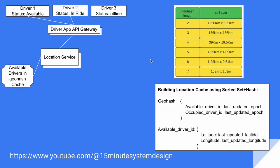Now, what is geo hash? Geo hash is a location encoding standard where the length of the geo hash determines the cell size in the map. This is how our sorted set for geo hash level looks. The geo hash ID is a key, and in the sorted set we maintain the driver ID along with the last updated epoch. We can also maintain a hash where the available driver ID is a key, and for each key we maintain latitude, longitude, and last updated epoch time.